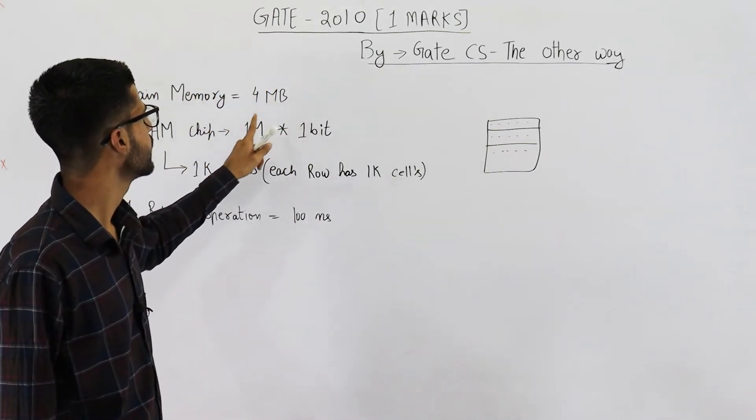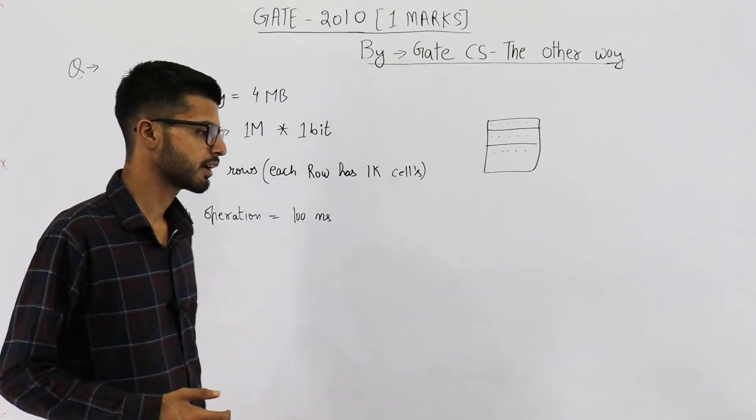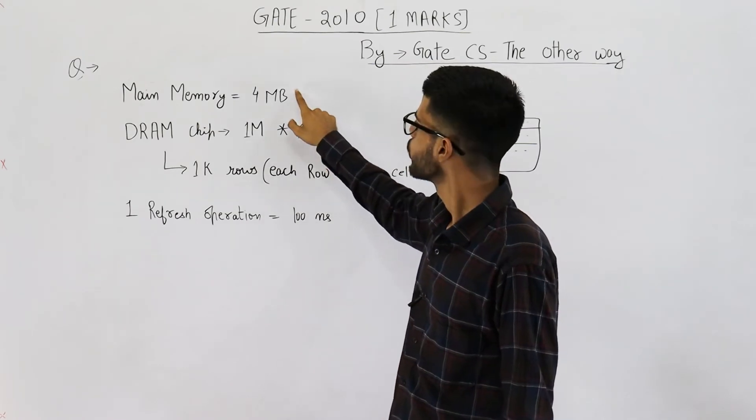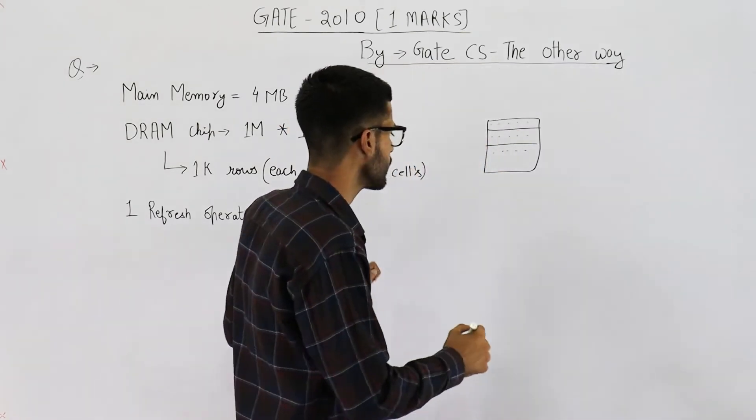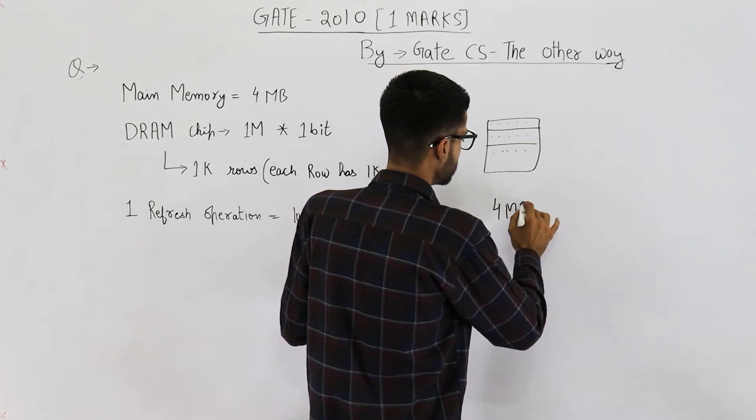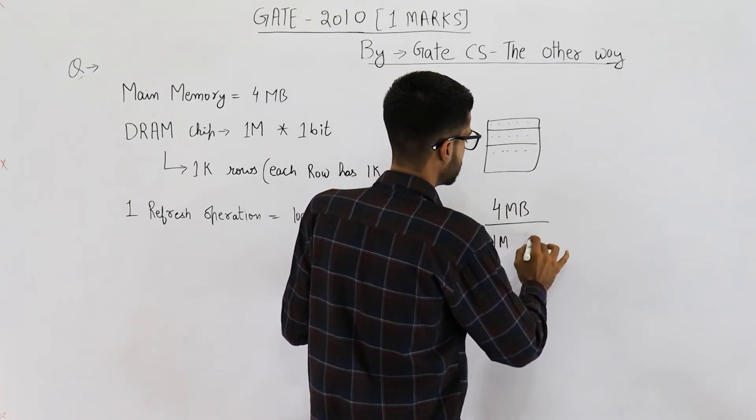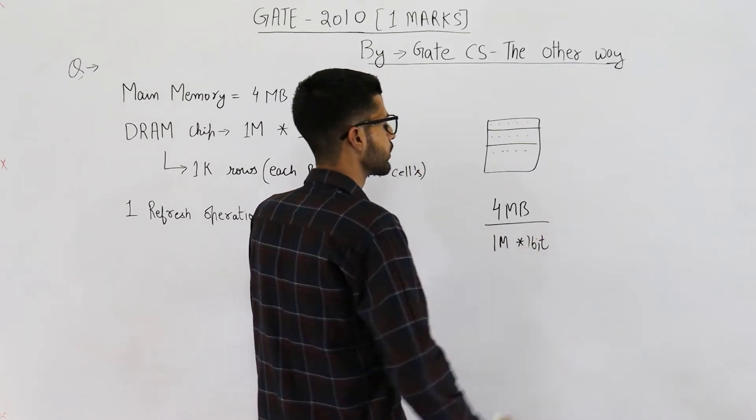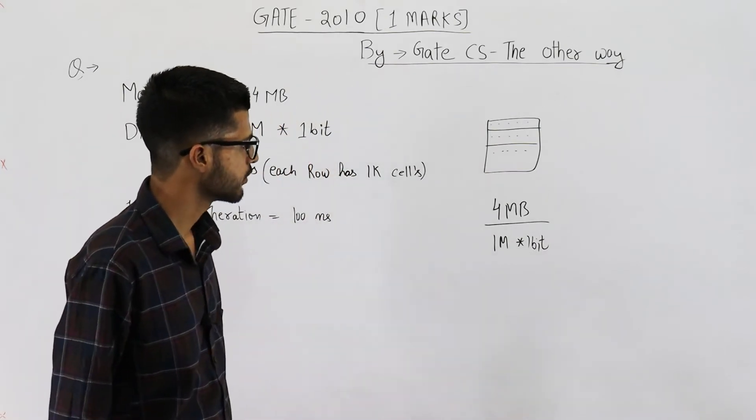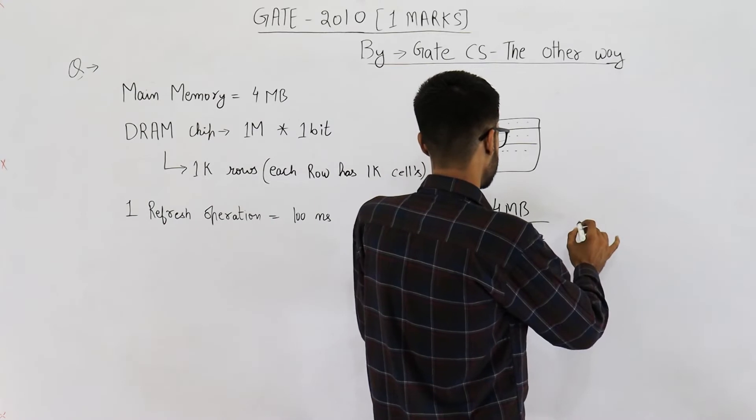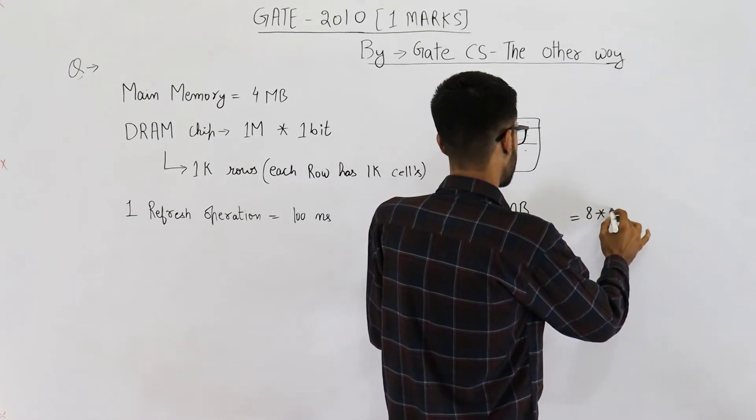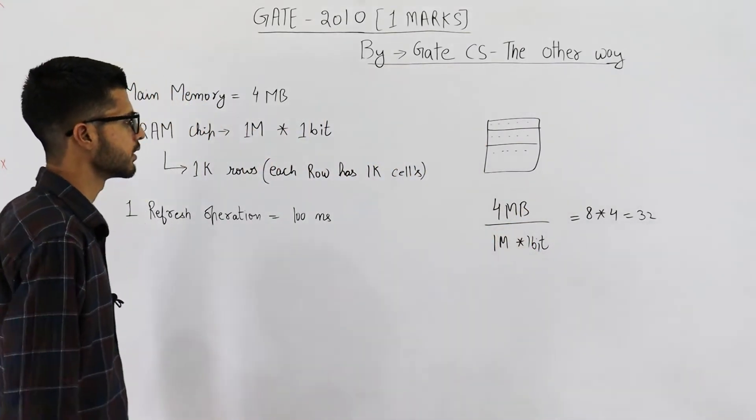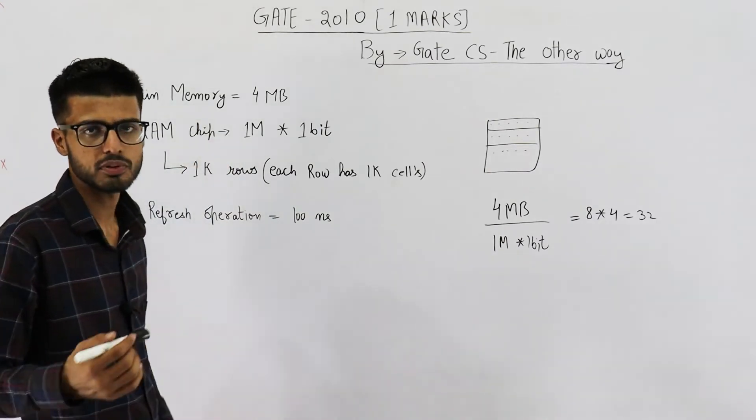Now, this is 4MB and this is 1M bit. Let's find out how many DRAM chips, how many such chips will be required to get 4MB of memory? So, this is 4MB divided by 1M bit, 1M into 1 bit. You can just solve it. This comes out to be 8 into 4 which is 32. Just convert this byte into bit. You will get 32. That means, 32 such chips will be required.